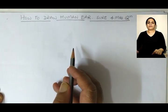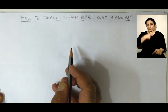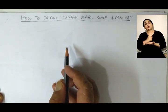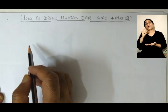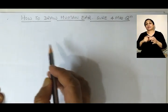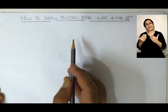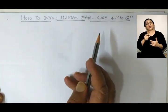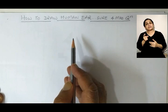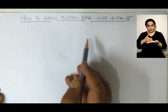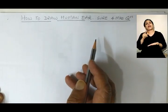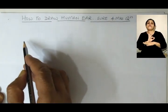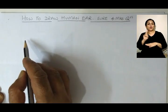The human ear is a sure form of question and drawing is very very easy. You should be able to label the parts and while labeling you should also know the function of the parts. Okay, let us see how we can draw this.